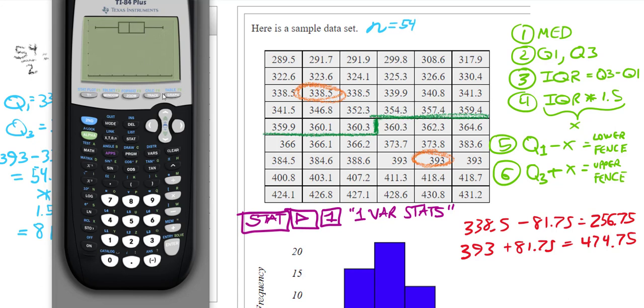Now if we hit graph, there's our box and whisker plot. I can click the trace key and see that my minimum is exactly what I thought it was going to be, 289.5. Our Q1 is marked at 338.5. I click the trace key and I'm using my arrows to follow my way around the box and whisker plot. My median is 360.3, which is exactly what I figured. Our Q3 is 393, and our maximum is 431.2. So there are no outliers because in this box and whisker plot, there are no dots that are disconnected from the box and whisker plot.